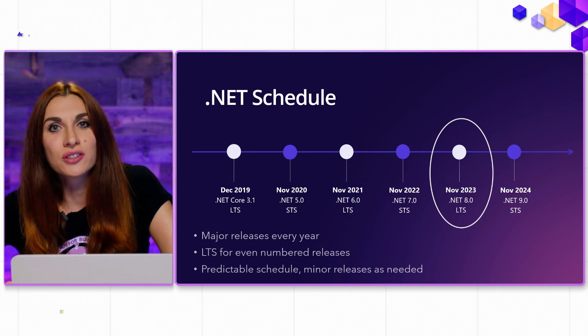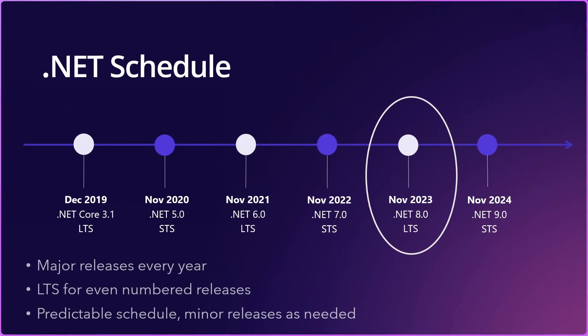We also switched to a new release schedule. Now we are releasing .NET every year in November — that was also a requirement from you. You asked for a specific schedule because it was hard to plan upgrades when you didn't know when the new version was coming. Now you know it's coming every November, and every other version will be a long-term support version, supported for three years, so you have plenty of time to upgrade.